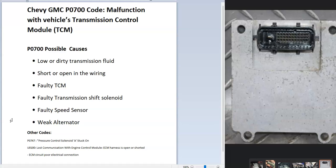Possible causes include low or dirty transmission fluid, a wiring problem, or the TCM itself having failed. There might also be a problem in the transmission like a shift solenoid, or it could be a faulty speed sensor. In some cases, a weak alternator has been reported — not very common, but if it's not putting out enough voltage for the circuit, it can cause this code.